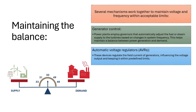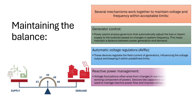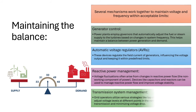Automatic voltage regulators (AVRs): these devices regulate the field current of generators, influencing the voltage output and keeping it within predefined limits. Reactive power management: voltage fluctuations often arise from changes in reactive power flow, the non-working component of power. Devices like capacitors and reactors can be used to manage reactive power flow and improve voltage stability.